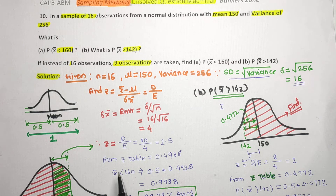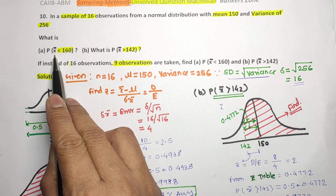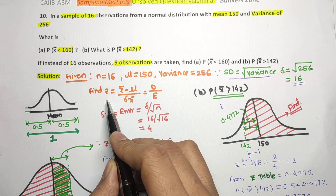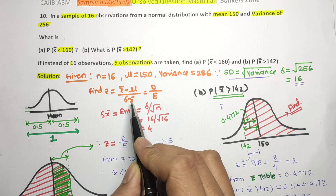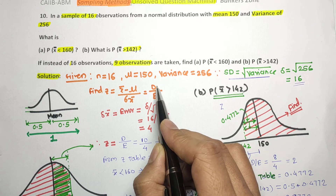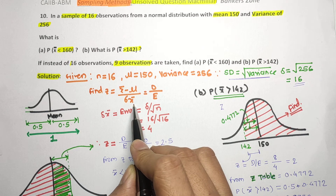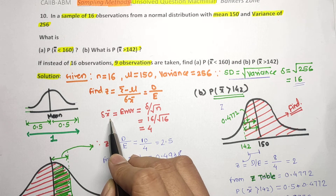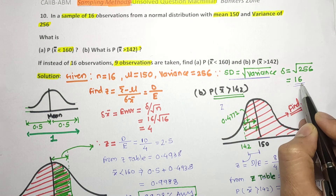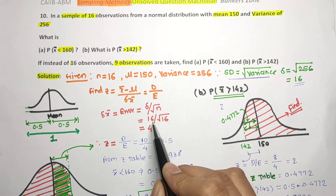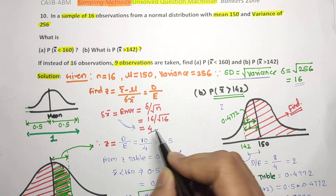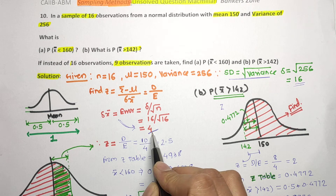We have to find the probability that the sample mean lies below 160. For this we need to find z, where z equals x-bar minus mu divided by sigma x-bar — difference divided by error. The standard error sigma x-bar equals sigma divided by the square root of n, which is 16 divided by the square root of 16, giving us 16 divided by 4, so the standard error equals 4.